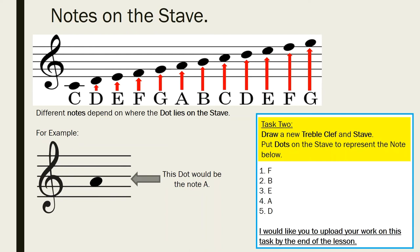Once you've done task one, we move on to task two, which is about the notes on a stave. We've looked at what the stave is — those five lines — and the treble clef, which is the swirly symbol. We are now looking more into how to write notes on the stave so we can read and write music. Different notes depend on where the dot lies on the stave. As the dot moves further up the stave — either in a space or on a line — the note changes.